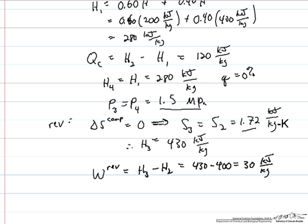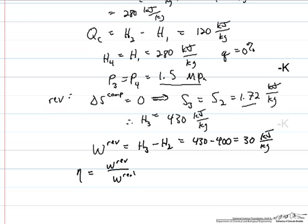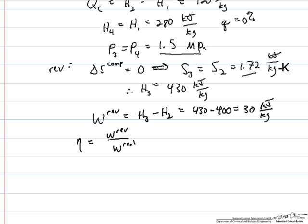But of course the real process isn't reversible, so we need to find some way of determining that efficiency for the compressor. That's equal to the reversible work over the work that was actually required. We actually are given enough information to determine the real work because we know our coefficient of performance for this system is 2.0, which is equal to the amount of heat removal that we get in the evaporator divided by the amount of work that we have to do with our compressor, and that work is the real work for the irreversible compressor that's actually operating in the system.